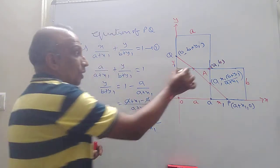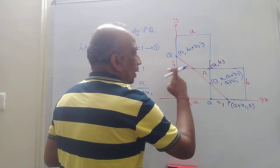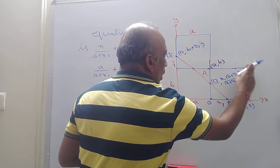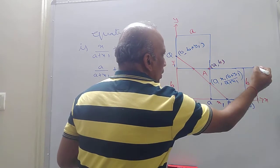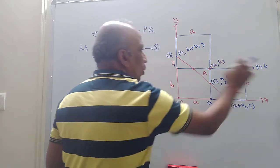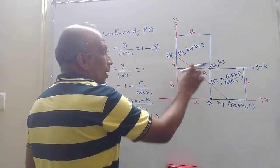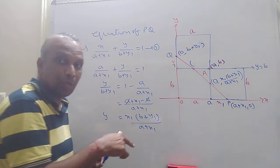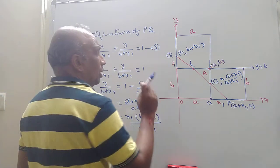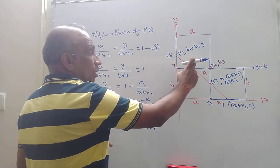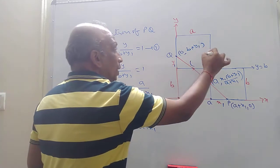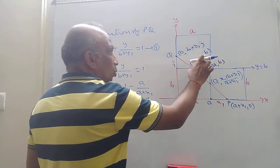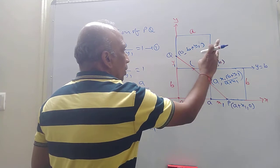Now I have to find another vertex. To find that vertex — this line is parallel to the X axis, so this line will be Y equals B. Wherever you go on this line, the Y coordinate is B only. So Y coordinate is B, and I want to find the X coordinate. Y coordinate is B, I should find the X coordinate. I will substitute Y equals B back into equation 1.